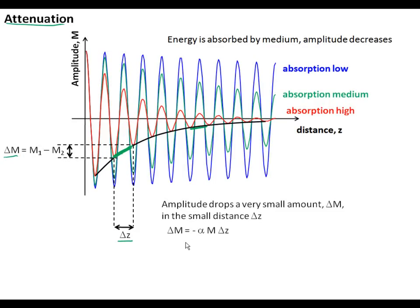And so we can write an equation like this that says the change in magnitude is proportional to some arbitrary proportionality constant, we're going to call alpha, times the magnitude times how far it travels. And then, you know, alpha is the slope, and this should actually be an M. M is the amplitude.